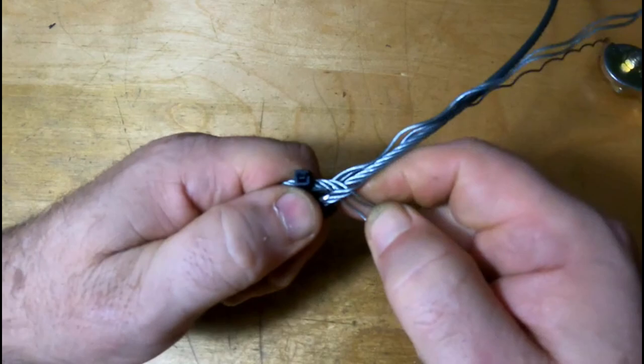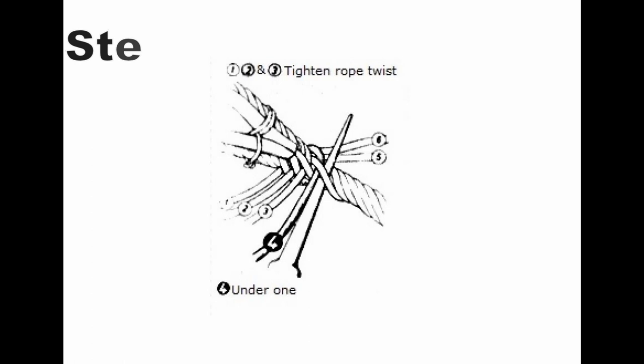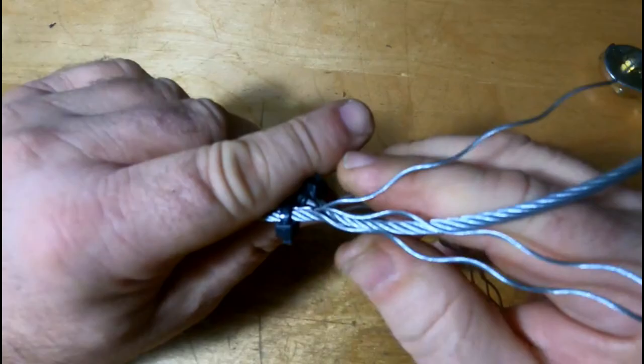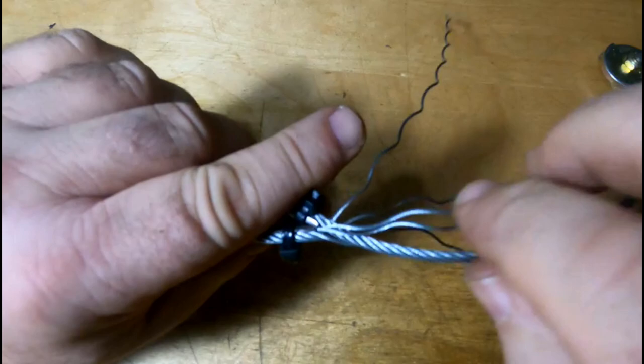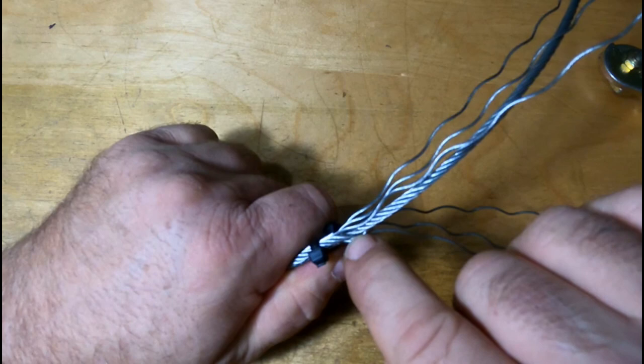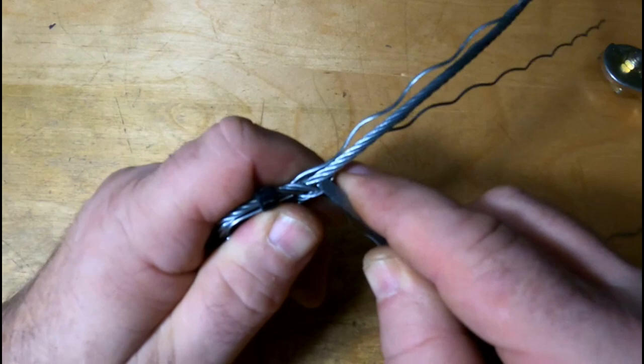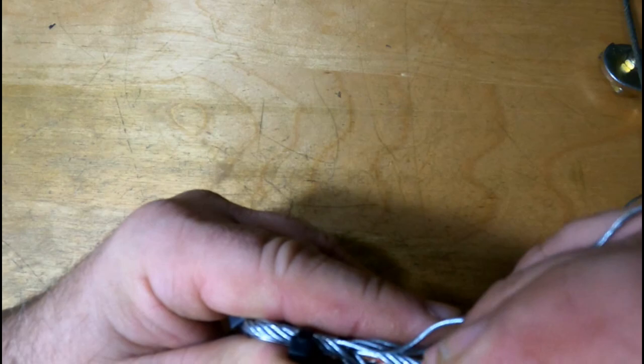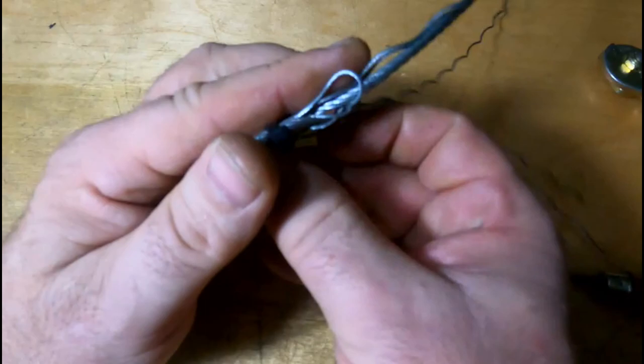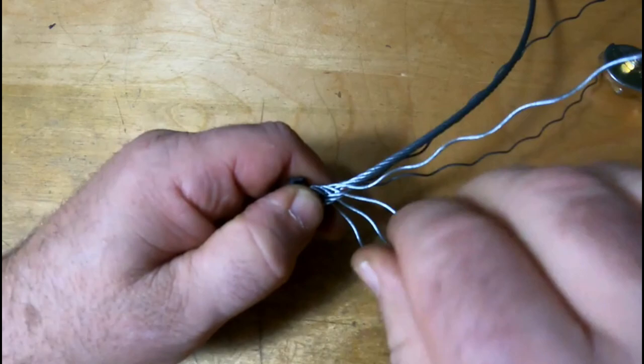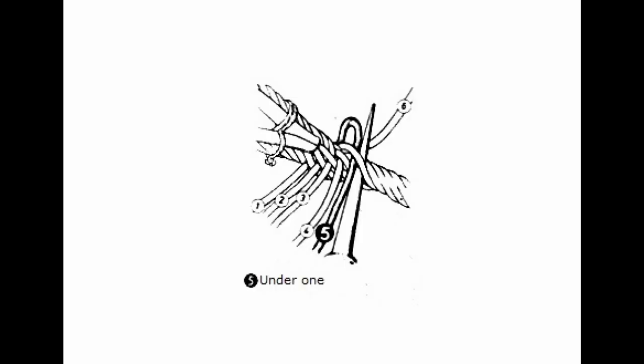Now you can see, one, two, and three, each have a thread. Now our next strand, this will be number four. This one has to go under that one strand. So we're going to separate it with our screwdriver. All right, you can see, one, two, three, and four.